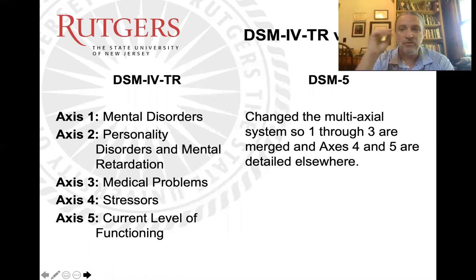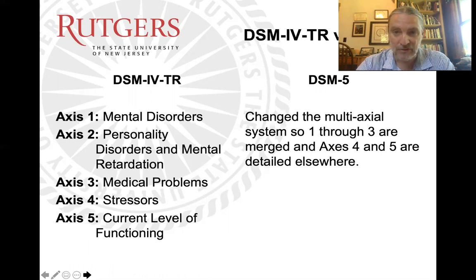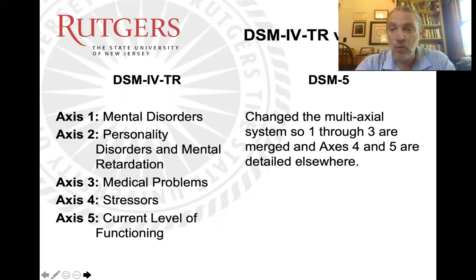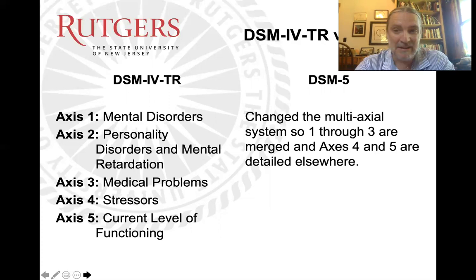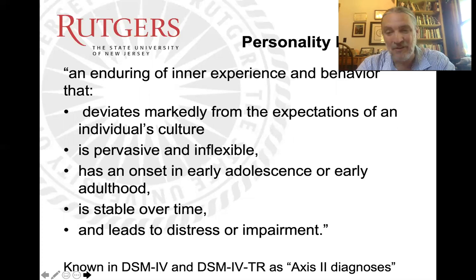In the past, personality disorders were considered on their own axis. The DSM-IV was the diagnostic manual until 2013, followed by the DSM-V. Most mental illnesses were categorized on Axis I. However, personality disorders, because of some different aspects about them, were grouped with mental retardation on Axis II. We don't necessarily have that anymore, so the old terms of Axis II disorders and Cluster B have largely gone by the wayside.